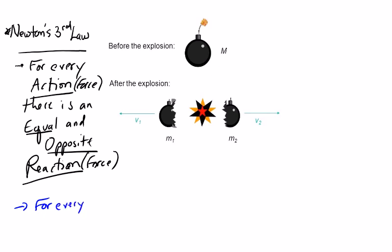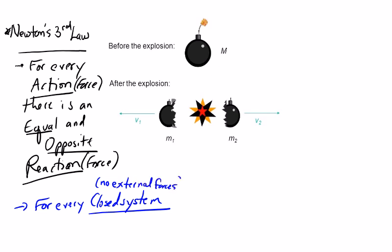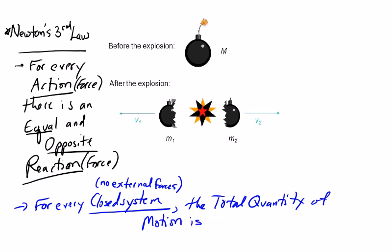For every closed system — meaning a situation where we're not looking at external forces, so no external forces — the total quantity of motion is conserved, or is constant.